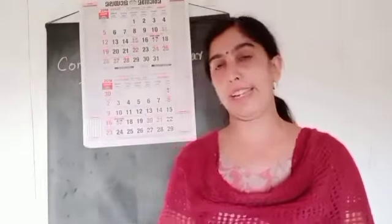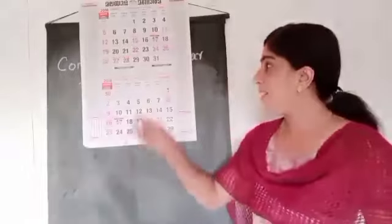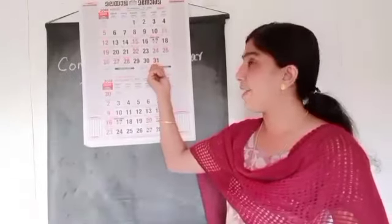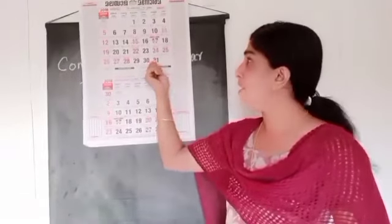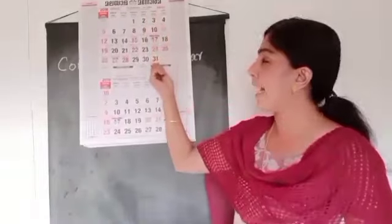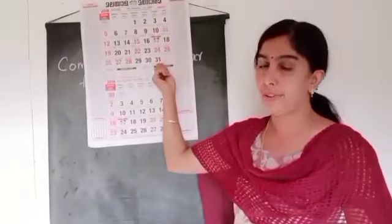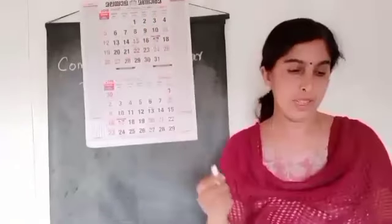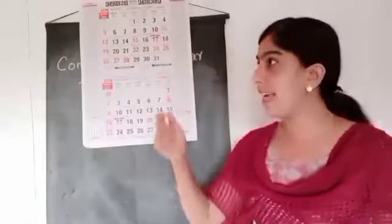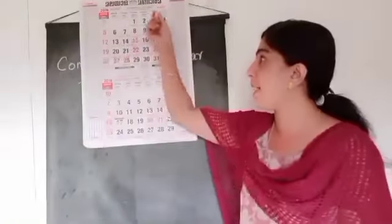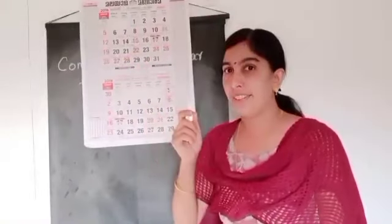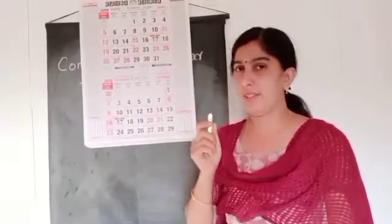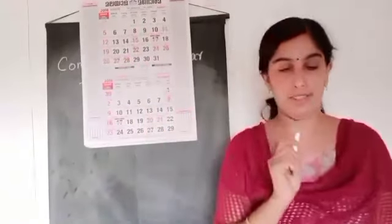Then the next question: on which day does this month end? So 31st is the last day. Which day is it? Friday. So you can write Friday. Then the next question: write the number of days in this month. How many days are in this month? 31 days are there.